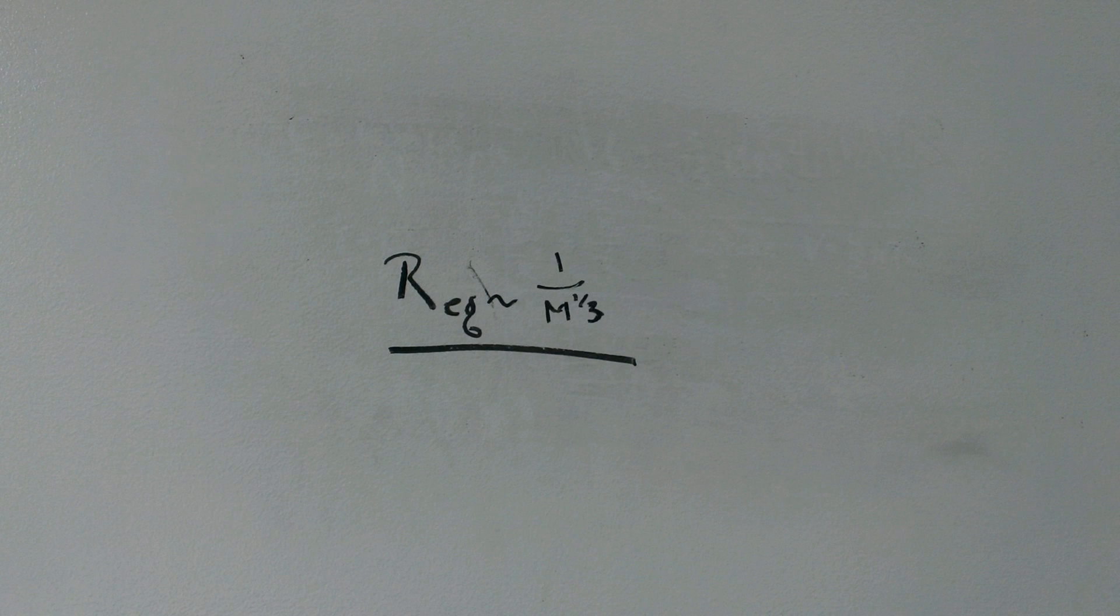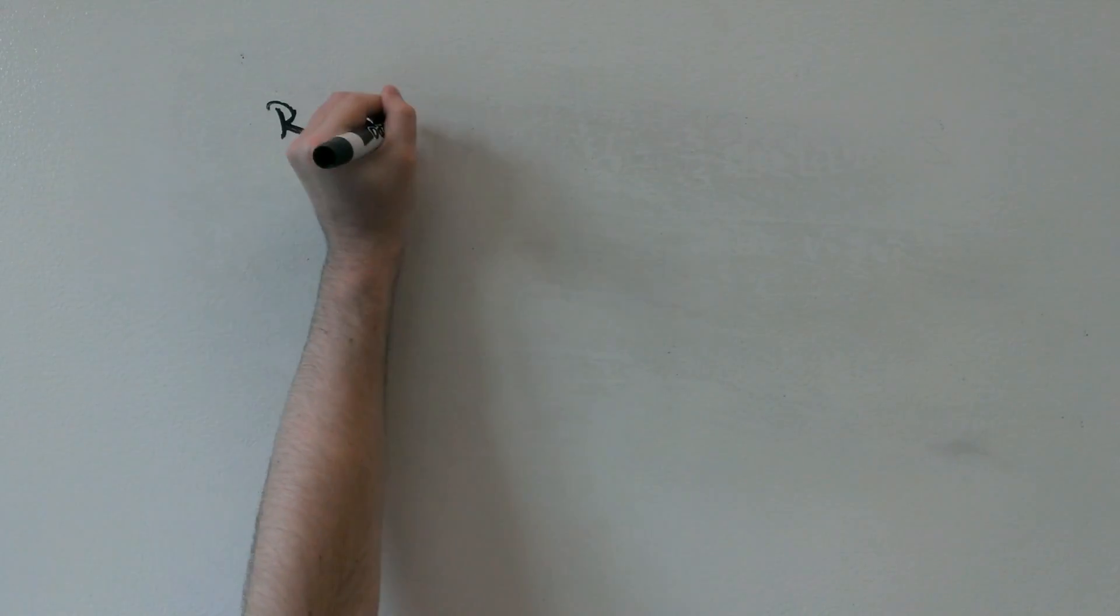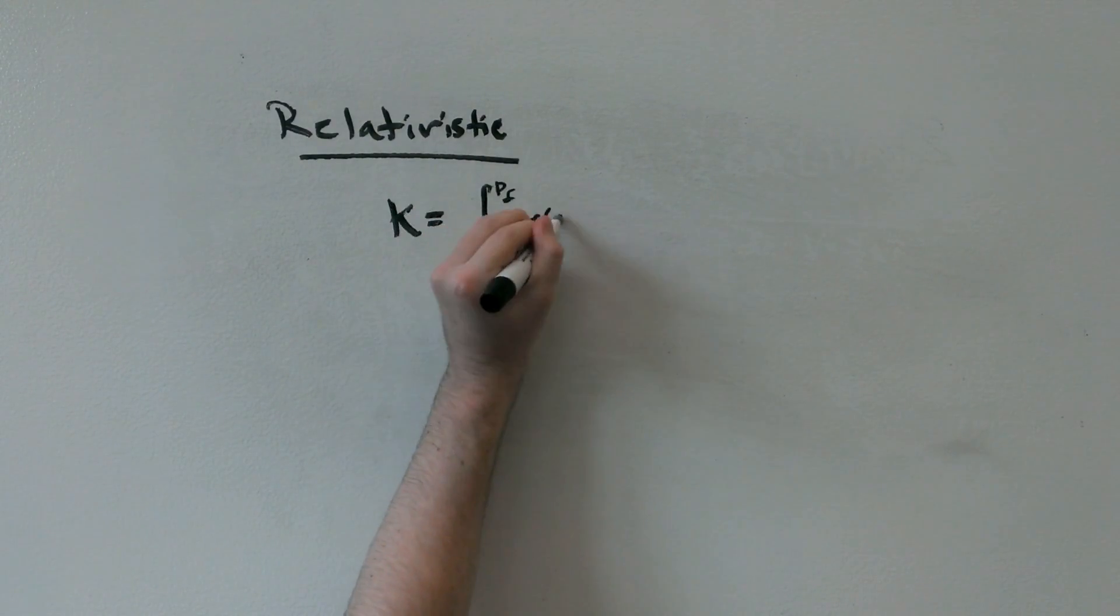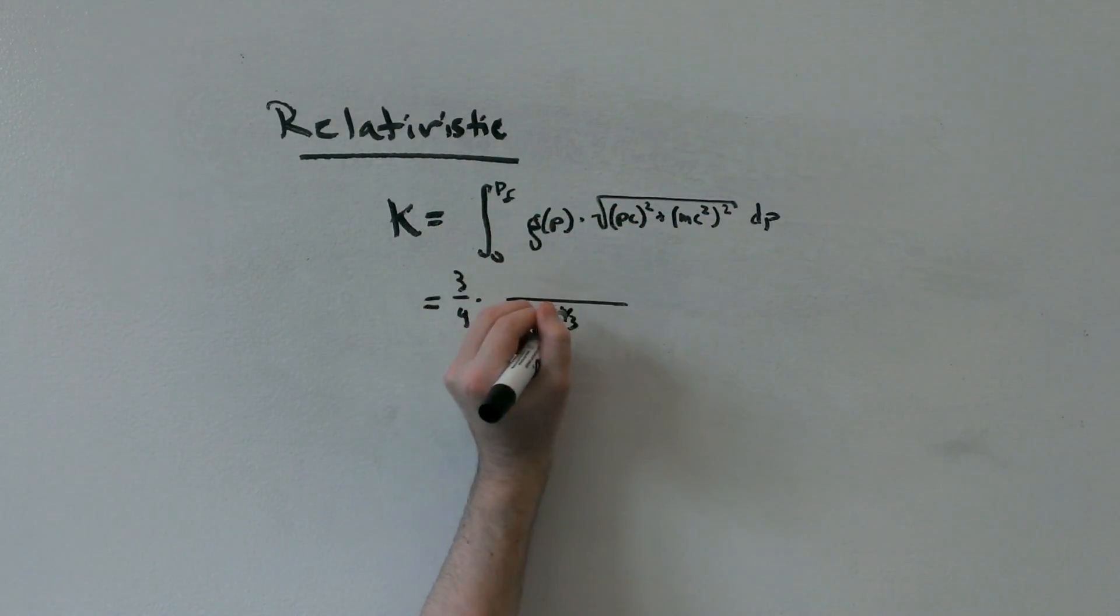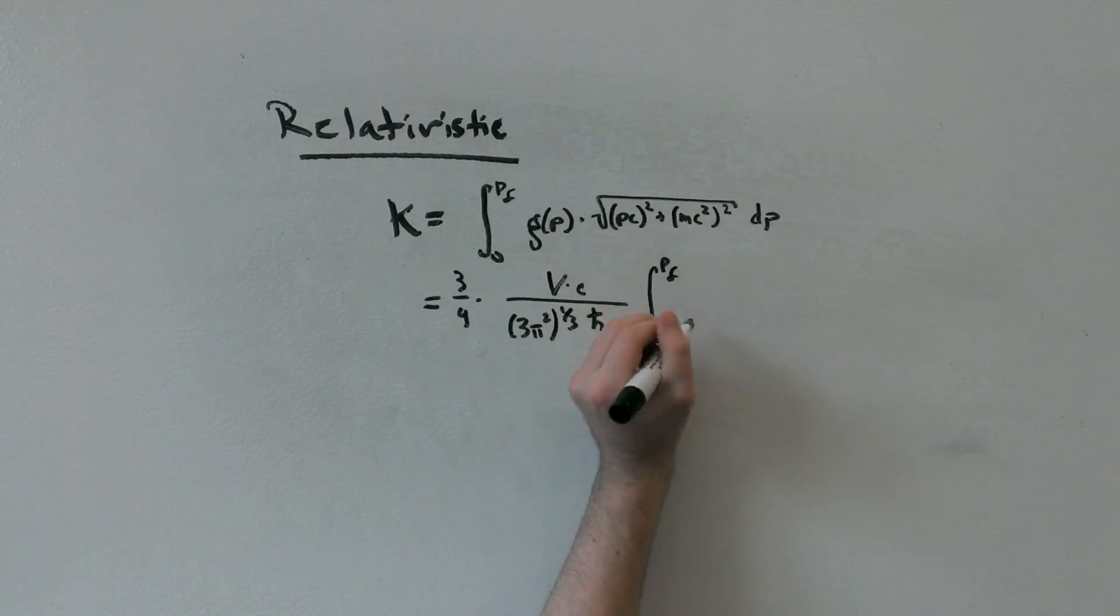It turns out that the assumption that the particles were non-relativistic is to blame, and we can adjust our result to eliminate this assumption. Here, to find the kinetic energy, we integrate the density of states and the relativistic momentum. Using binomial expansion, we arrive at a total energy.